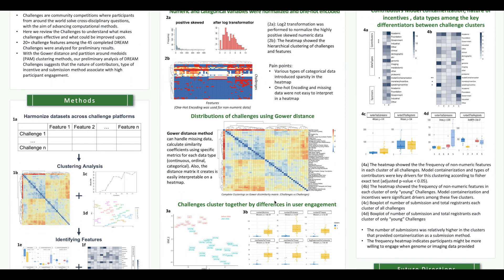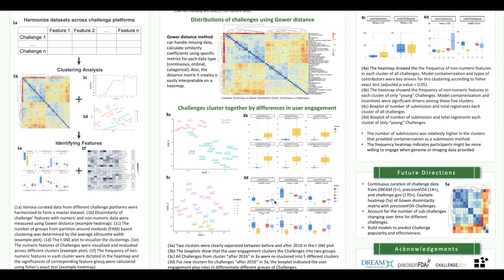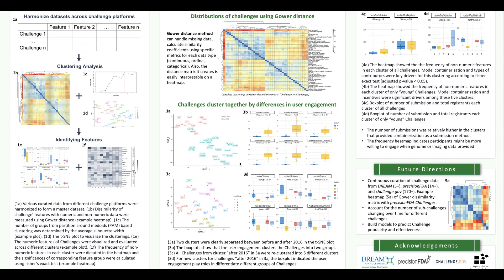Therefore, we decided to use the Gower distance method, which works well for mixed-type data and can also handle missing data. The heatmap on the right shows the dissimilarity matrix of DREAM challenges using Gower distance. We could see three clusters already, but we will further use PAM to do clustering, since it's a better fit for mixed-type datasets.